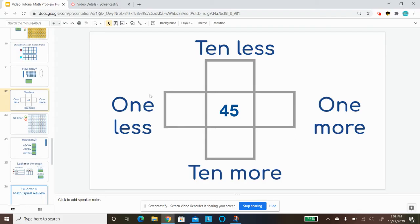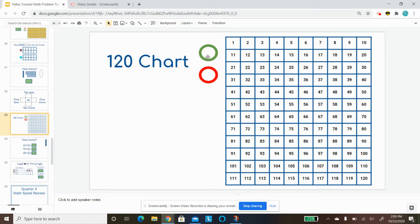And so to do this, we're going to use our 120 chart, and I'm going to look for that number 45. So I'm going to come down to 45, and then I'm going to look for those four numbers.